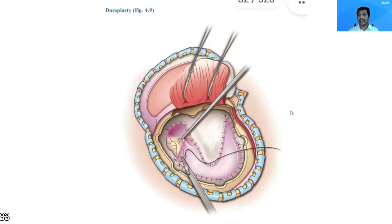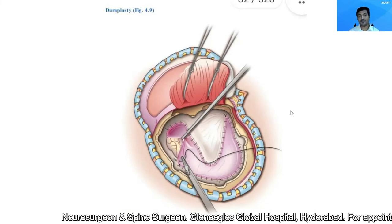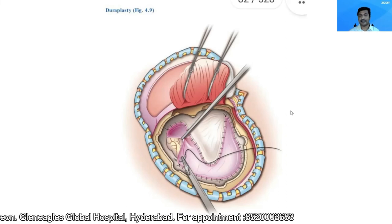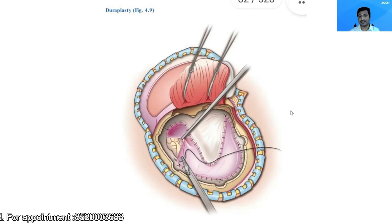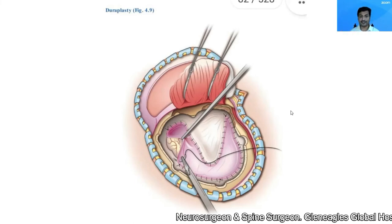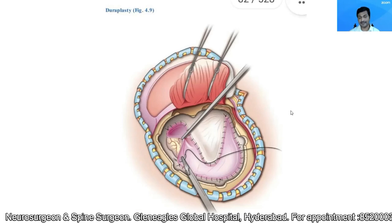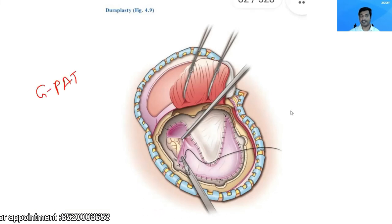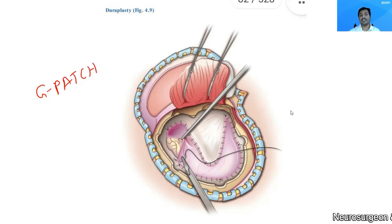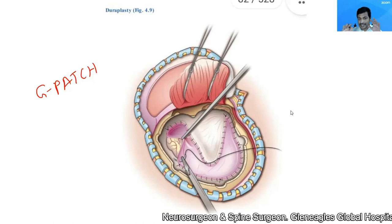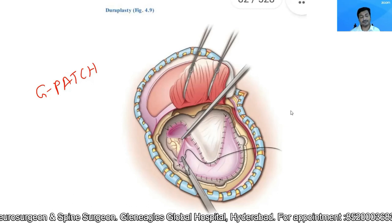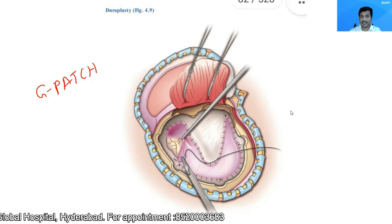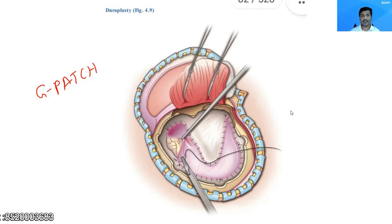Once I have done my procedure, I complete the duroplasty. I will either use the pericranium which I have harvested before. If I was not able to raise the pericranium intact — which happens more frequently in traumatic brain injuries — in our institute I sometimes use the inner layer of galea, which is a robust layer, to complete the duroplasty. Sometimes we also use artificial patches like G-patches, which are commercially available in India. There are also surgeons who don't close the dura; they place Abgel over it, which forms a layer over time. This is surgeon's preference; I prefer to close it.